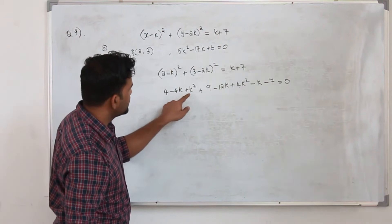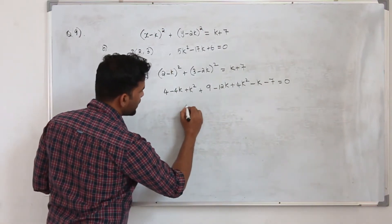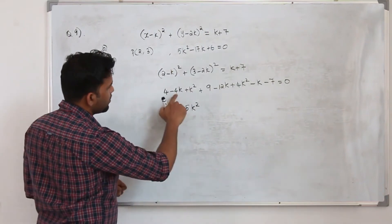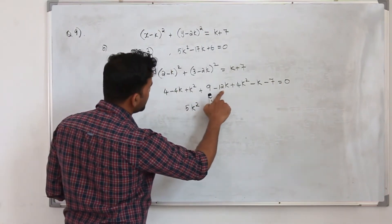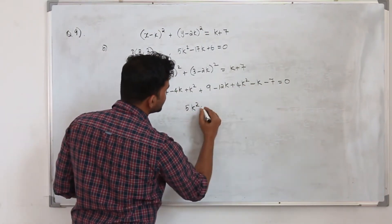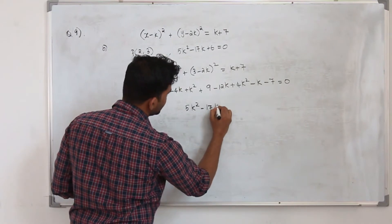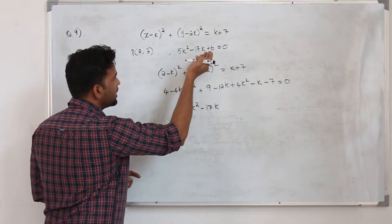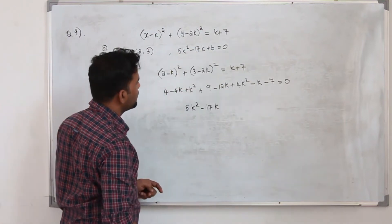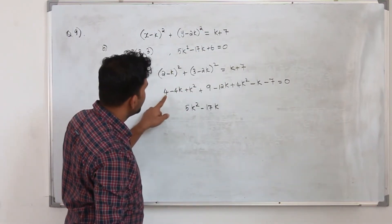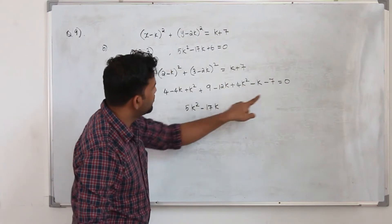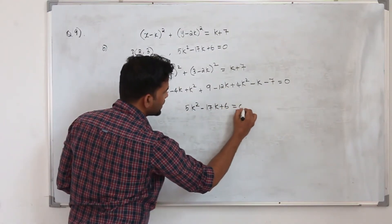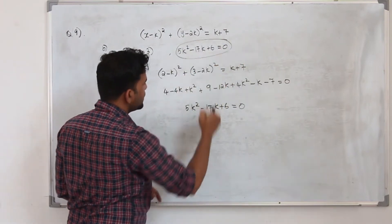Simplify: k squared plus 4k squared is 5k squared. We have minus 4k minus 12k giving minus 16k, and then minus 13, wait — minus 4k minus 13k is minus 17k. The constants 4 plus 9 equals 13, minus 7 gives plus 6. So we get 5k squared minus 17k plus 6 equals 0, which is the same as the required equation.